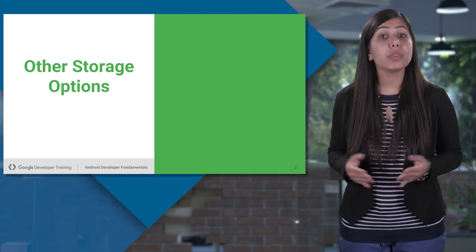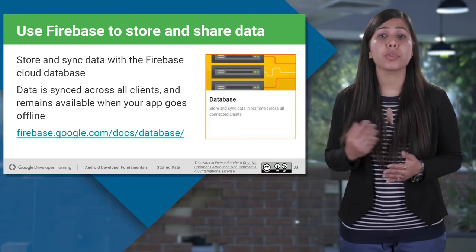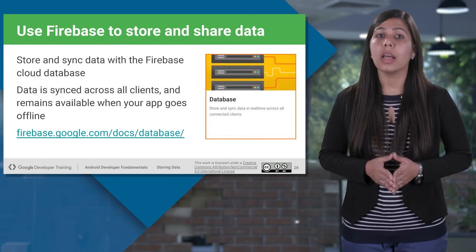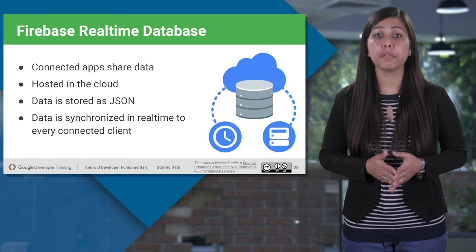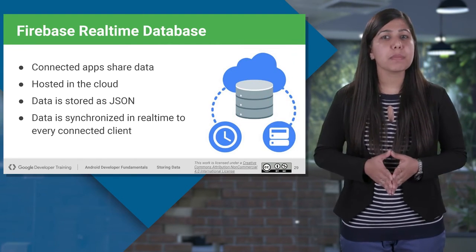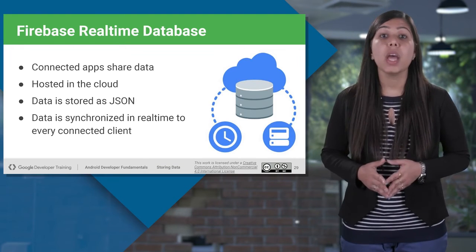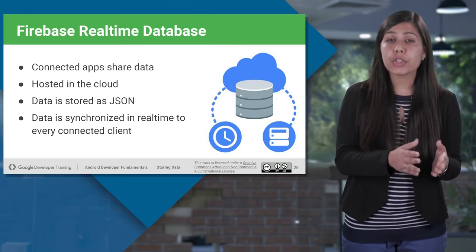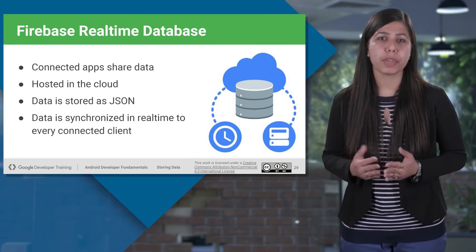Use Firebase to store, share, and sync data in real time. The data syncs across all clients and remains available on your device even if your app goes offline. Firebase provides several features for building powerful mobile apps. As it is hosted in the cloud, connected apps can easily share and synchronize data in real time. The data is stored in JSON format — a hierarchical key-value data structure where each key refers to objects containing values pointing to other objects, essentially a tree of key-value pairs.